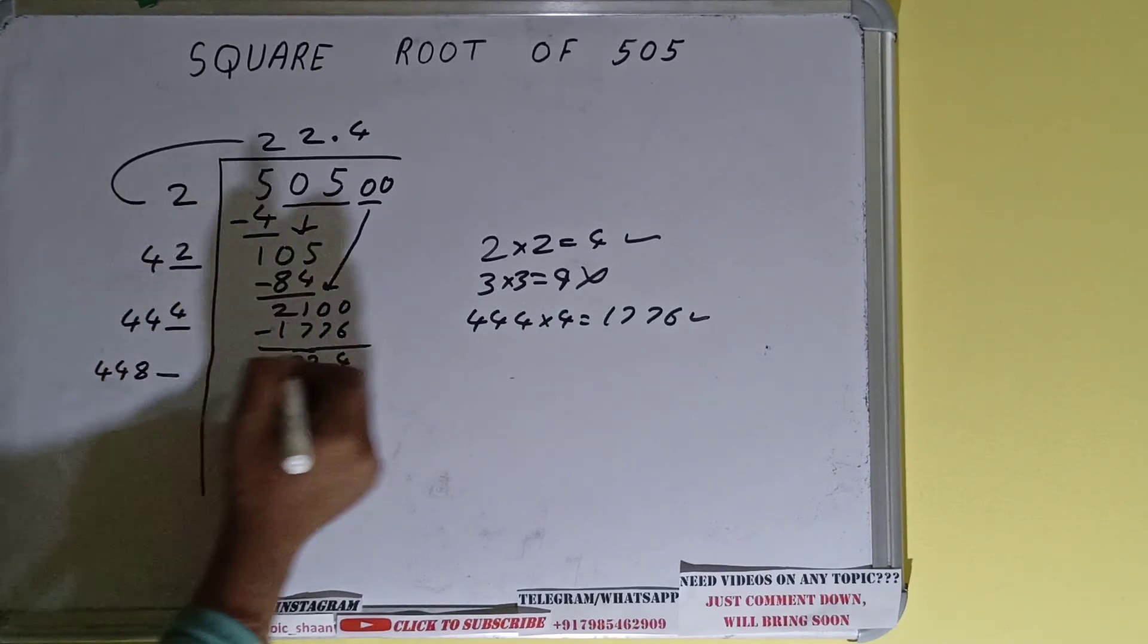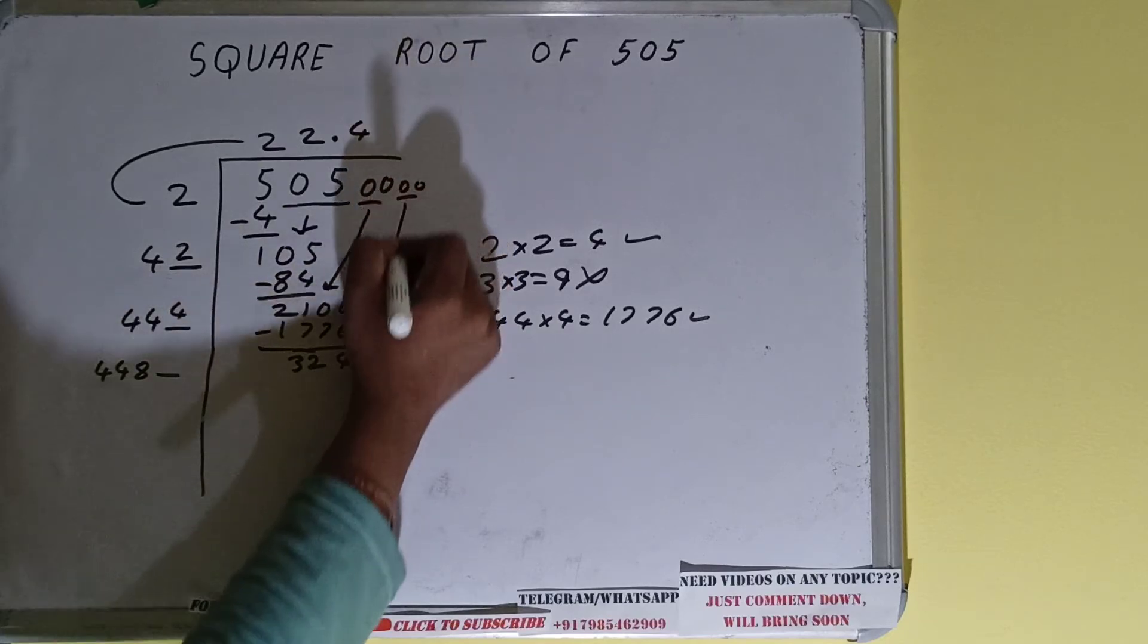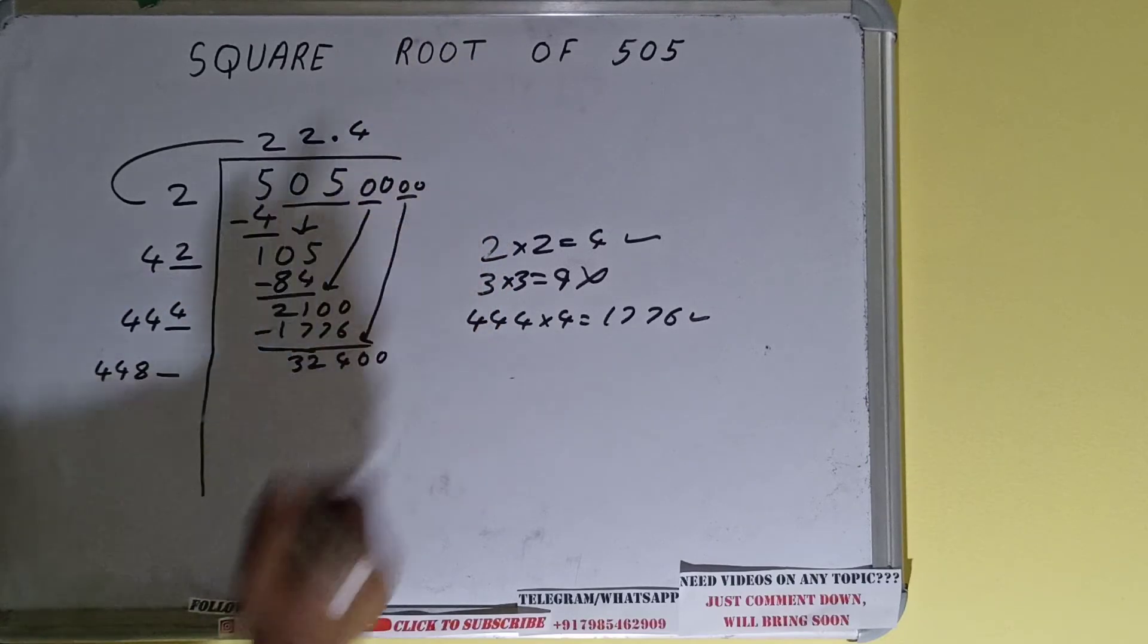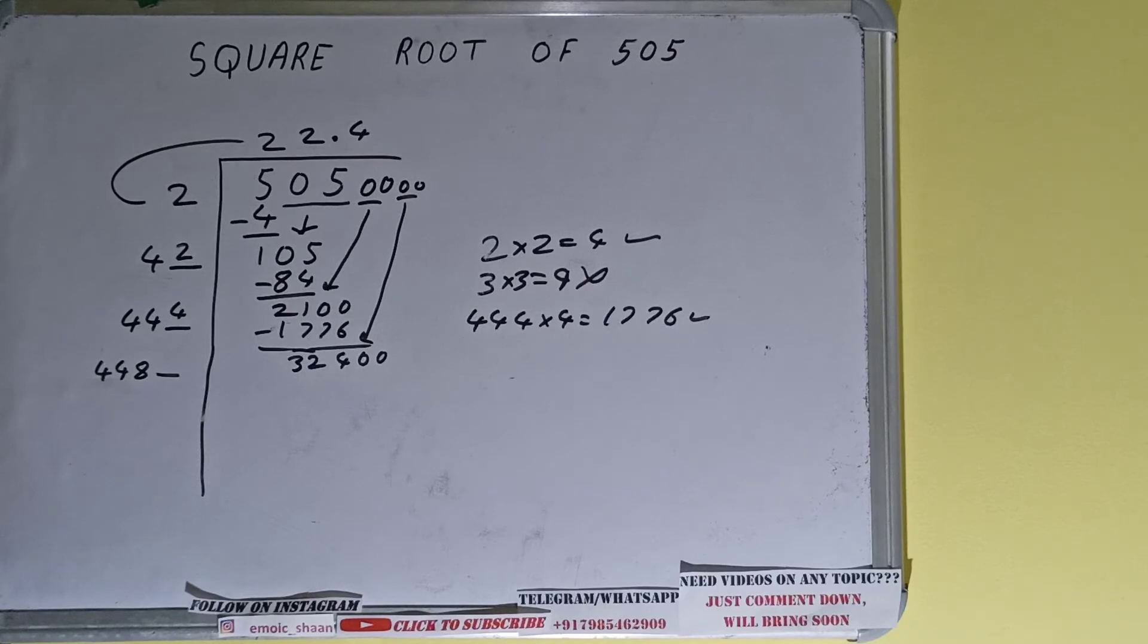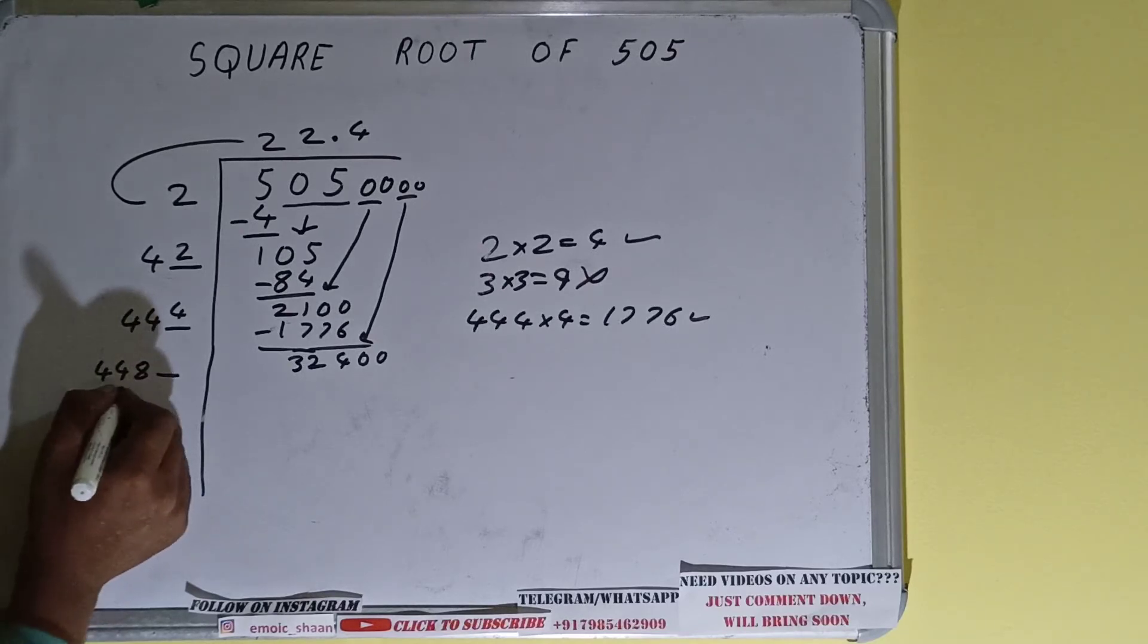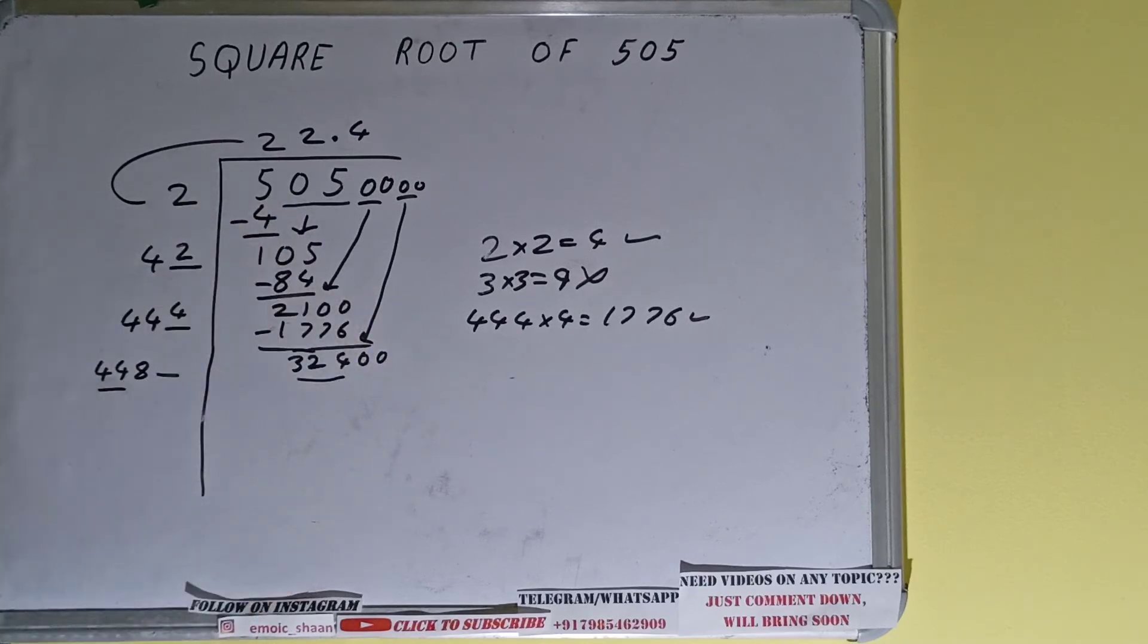And one digit extra, and this number we need to make it big. So bring the next pair of zeros down and it will become as 32400. That is 32,400, right? Now compare this 448 with this 324.